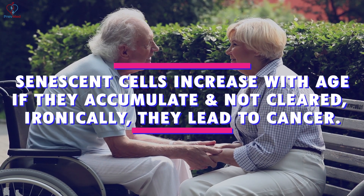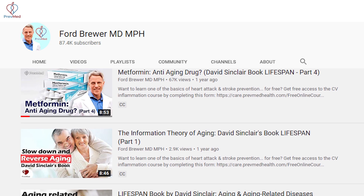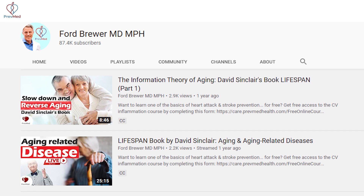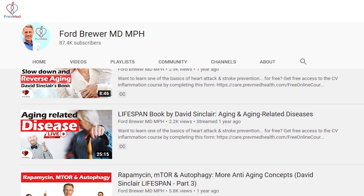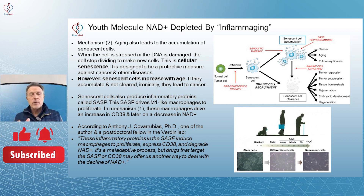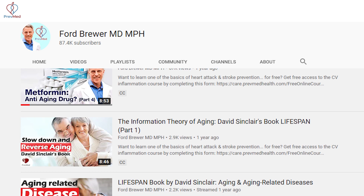This is called cellular senescence. It's designed to be a protective measure against cancer and other diseases. However, senescent cells increase with age. If they accumulate and they're not cleared, ironically, they lead to cancer. David Sinclair wrote a book called Lifespan — I did a series of about nine videos on that book, one of which focuses specifically on senescent cells. Senescent cells do play a positive role — it's a protective role, helping cells shut down when needed, as cancer is an overactivity of growth and replication. Senescence helps slow that down.